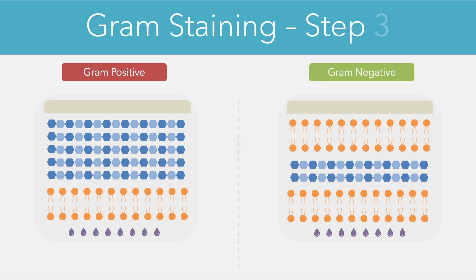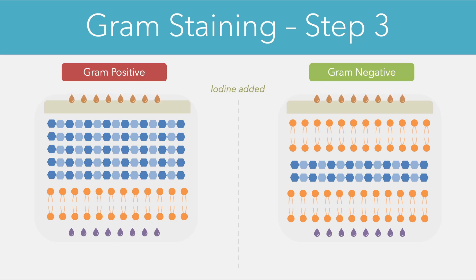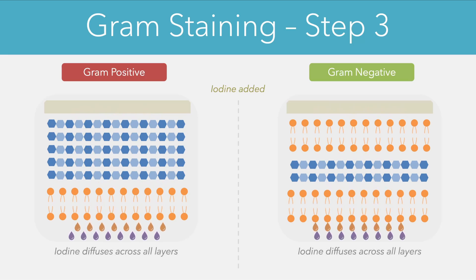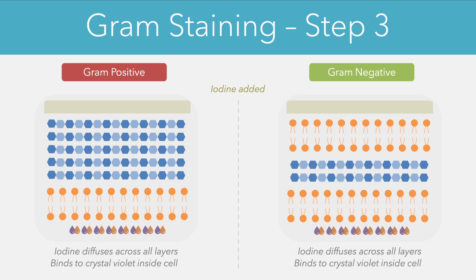The next step involves adding another substance known as iodine. Just like the crystal violet, this iodine is able to diffuse across all of the outer layers and enter the cell. Once inside, these iodine molecules bind to the crystal violet to form complexes, and the entire purpose of this step is to basically fix the crystal violet inside the cells. If we looked under a microscope at this point the cells would remain purple because the crystal violet is still retained.